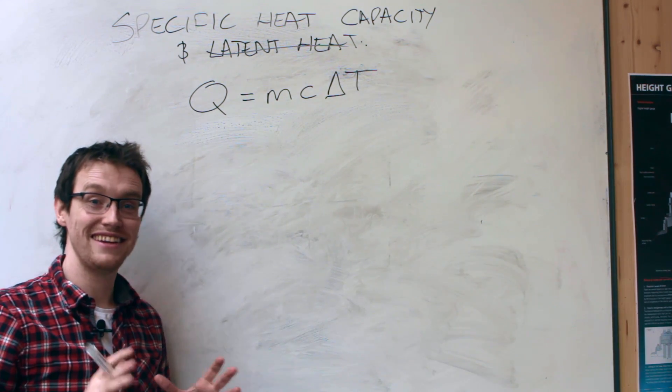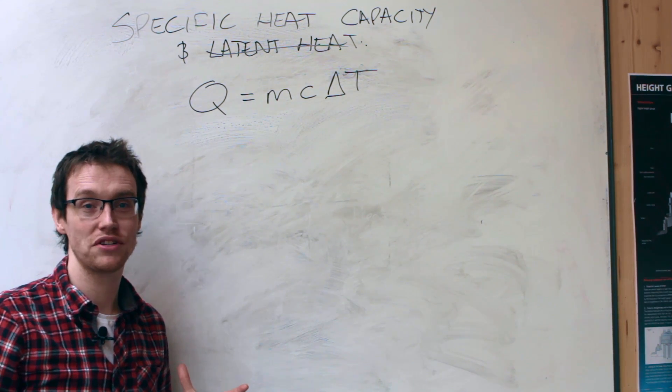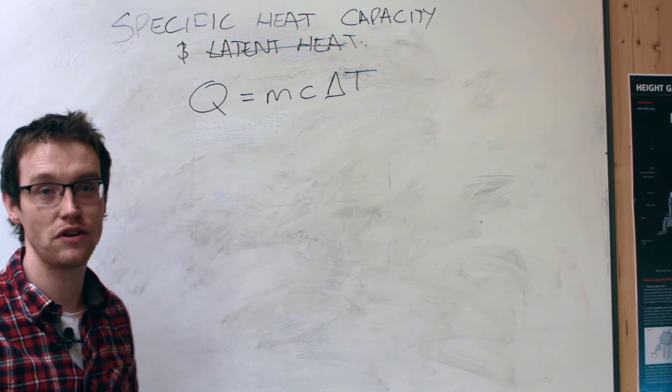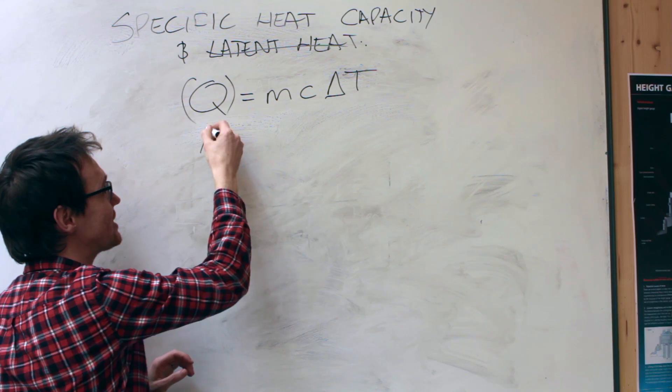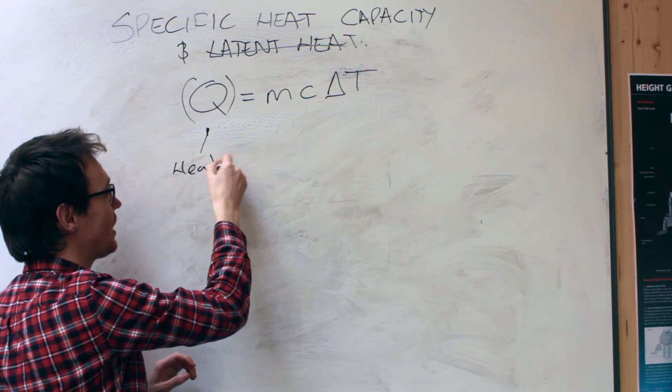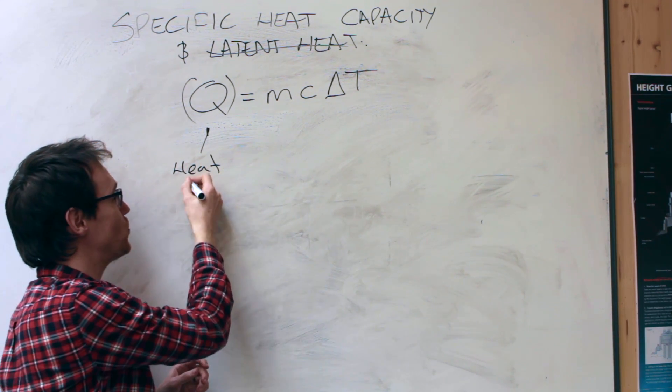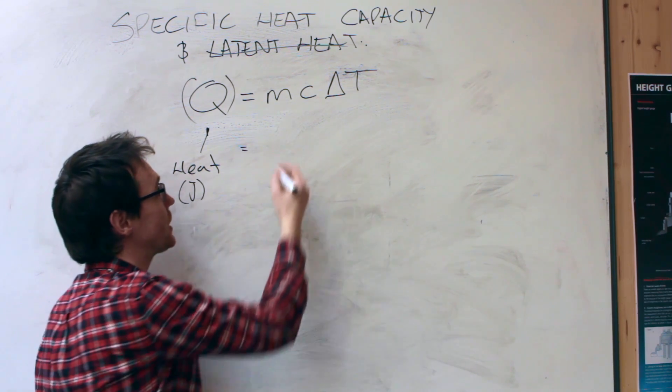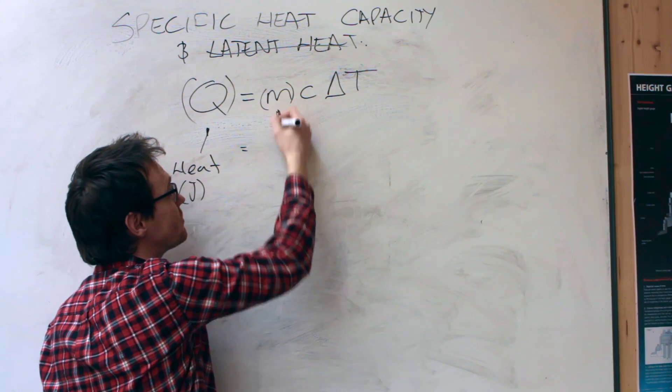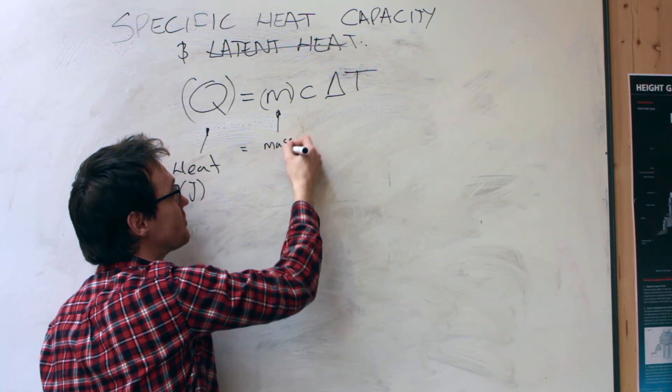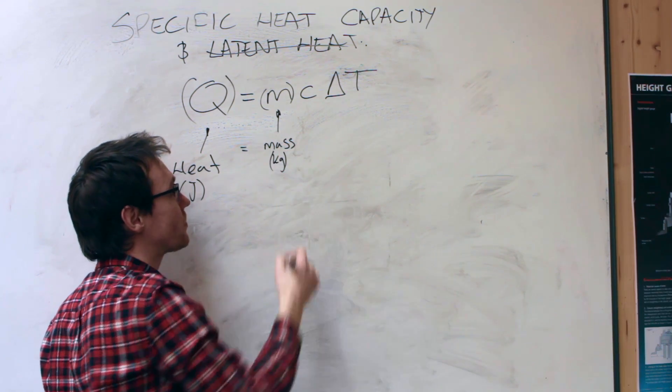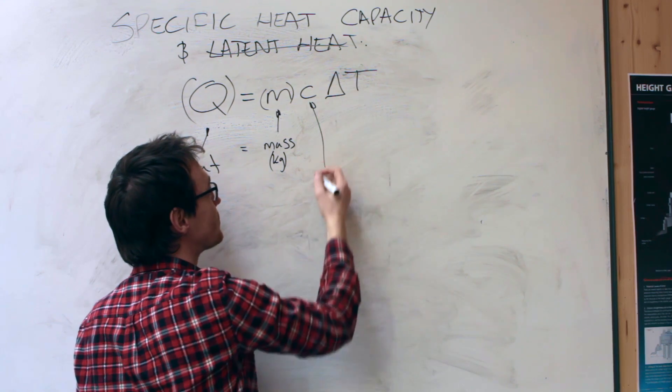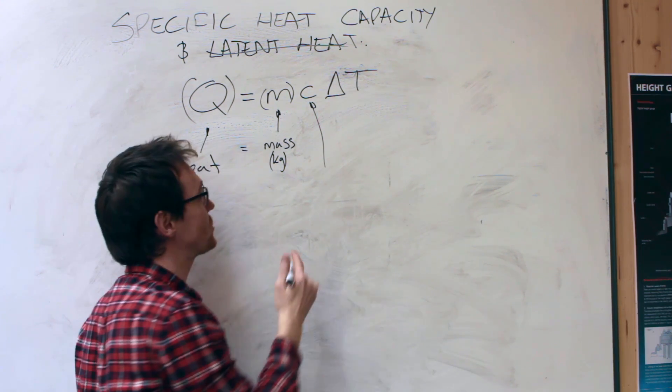The formula that you need for these specific heat capacity questions is Q equals mc delta T. So let's look at what each one of these means. Q is the heat, and the heat is given in joules. M is the mass of the object, given in kilograms. C is the specific heat capacity.